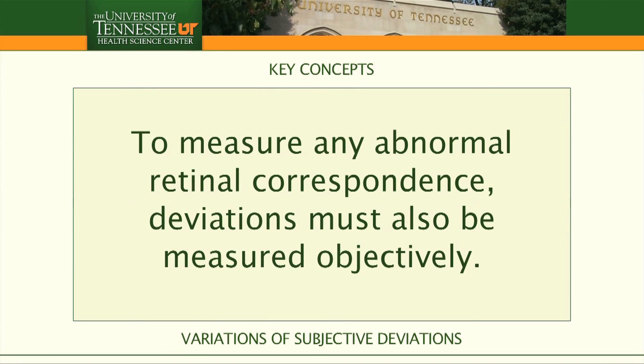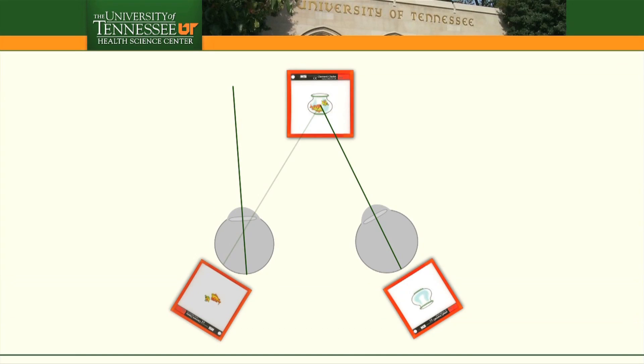To detect and measure any abnormal retinal correspondence, deviations must also be measured objectively. The size of abnormal retinal correspondence is the difference between full objective and full subjective deviations.